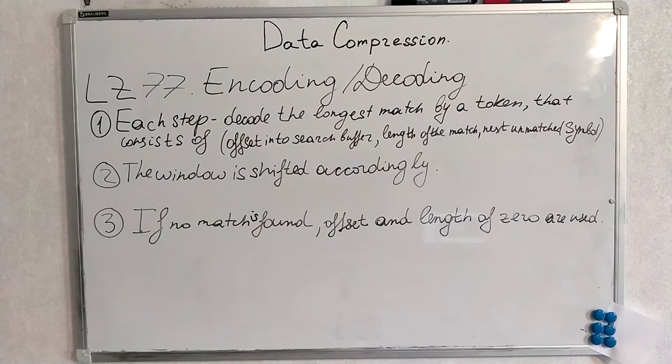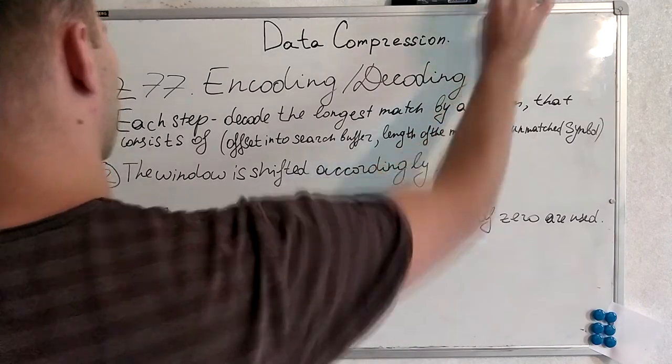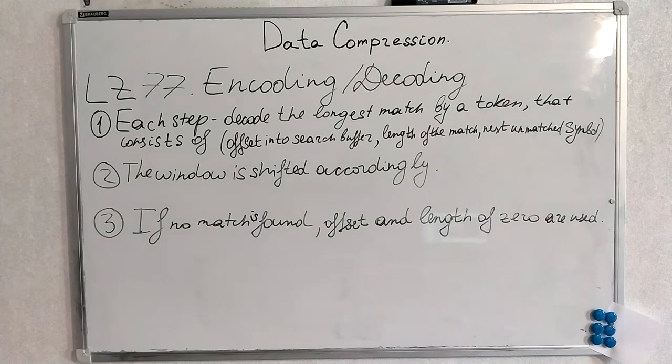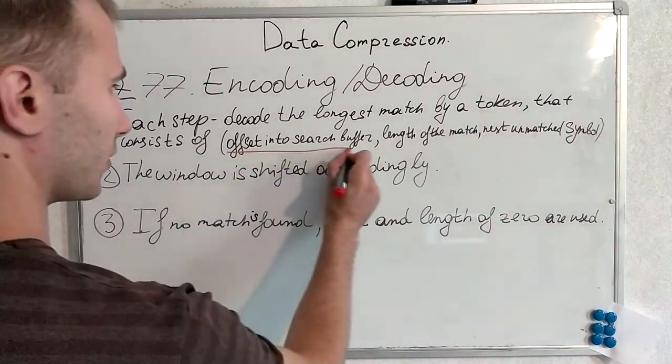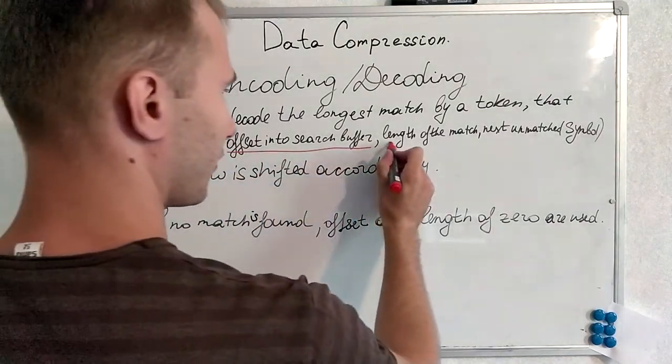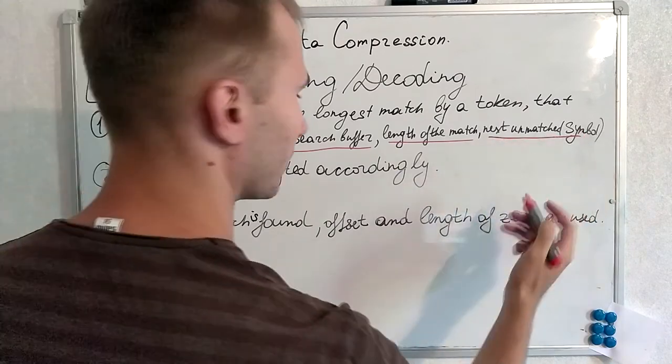As always, here is the outline of the algorithm we are going to use. It is called LZ77 and the three main steps of the algorithm we will use are written here. On each step we will decode the longest match by a token that consists of offset into the search buffer, length of the match and next unmatched symbol.